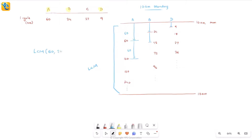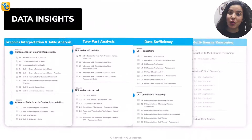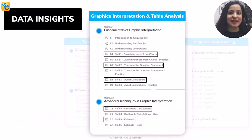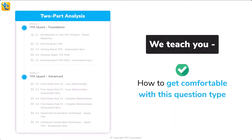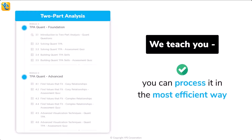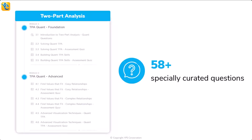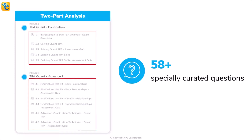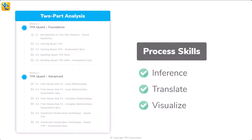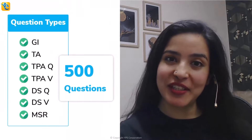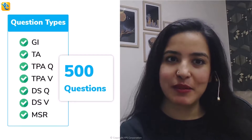Could you have arrived at this approach with clarity had you not thoroughly understood the data set? Such is the power of owning the data set. We have created a course architecture that teaches this skill through every guided quiz in the e-GMAT DI course, with over 58 specially curated questions in TPA Quant modules covering process skills of inference, translation, and visualization.